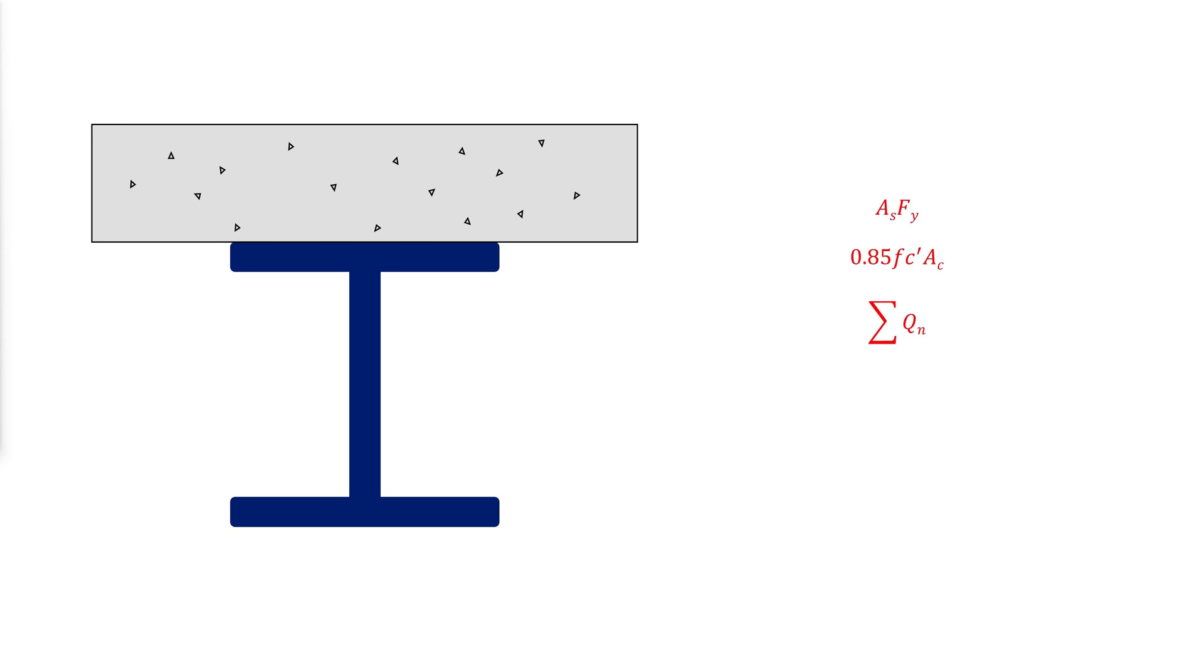To determine which of the three cases will happen, compute the compressive resultant as the smallest of the following. Where As is the cross sectional area of the steel shape, Ac is the area of the concrete.